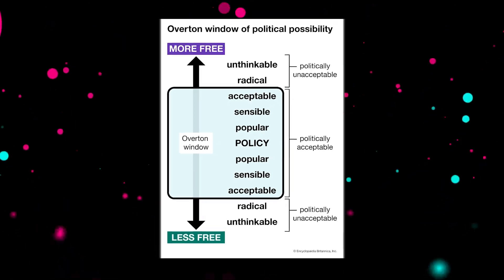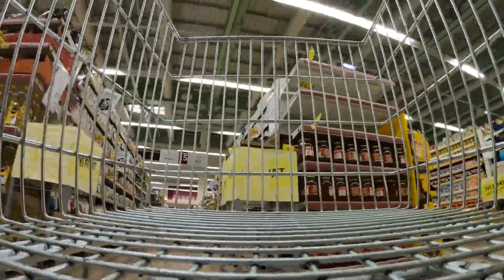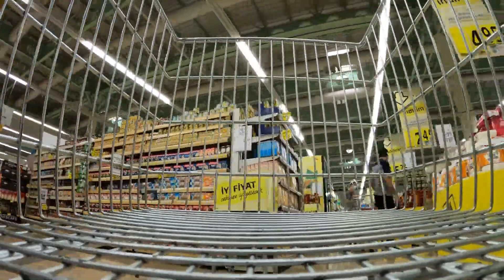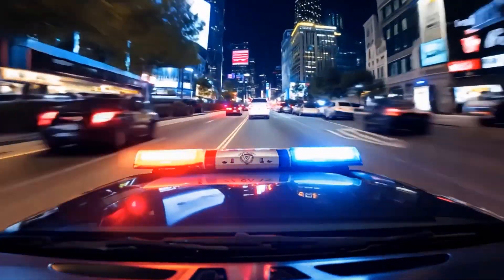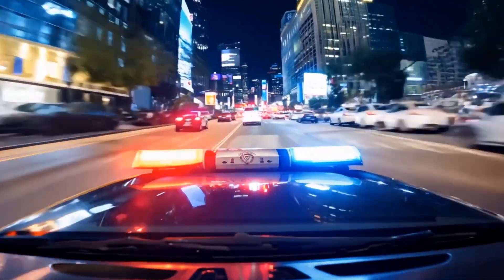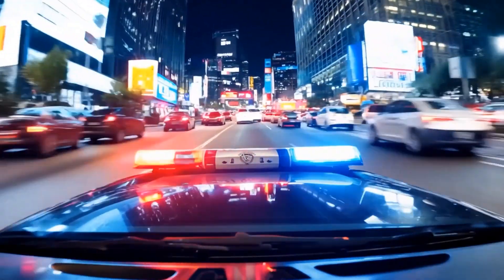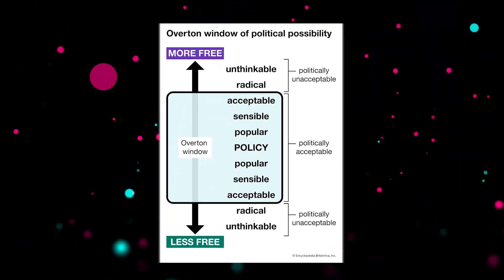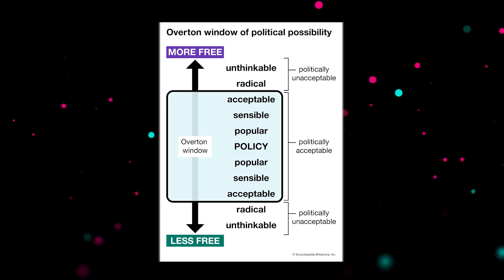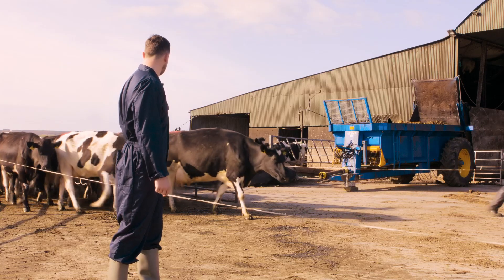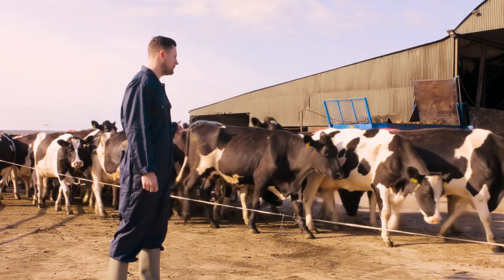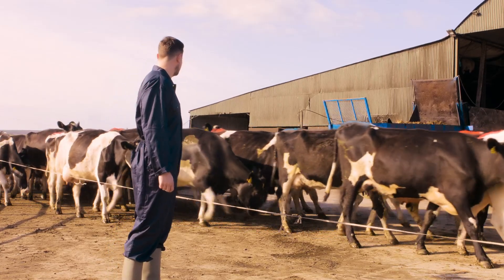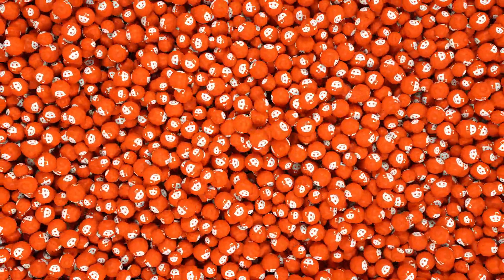Ideas like running government-run grocery stores probably fit into this category. Then you move on to radical positions, such as supporting police abolition, which is great if you enjoyed the experience of being robbed at knifepoint. At the end of the spectrum, you have the unthinkable, which involves state mandates to allow zoophiles to mate with farm livestock. I don't know if there's a WhatsApp group or subreddit which promotes human-cattle relationships, but I wouldn't be surprised at this point.